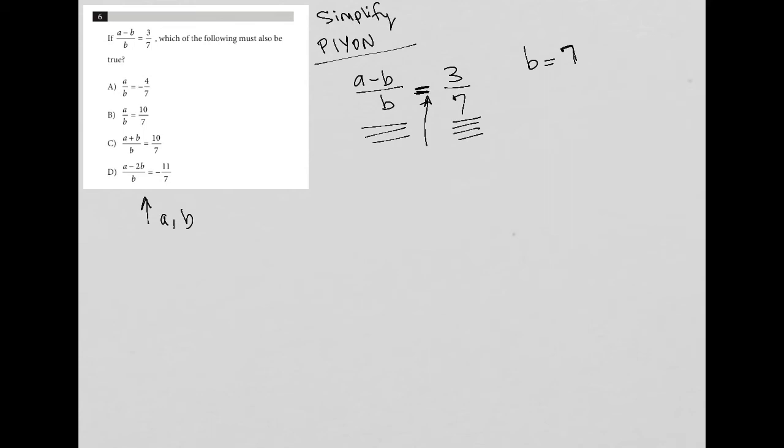So now, if B equals 7, and then A minus B equals 3, that means that A minus 7 equals 3, that would mean that A must equal 10.